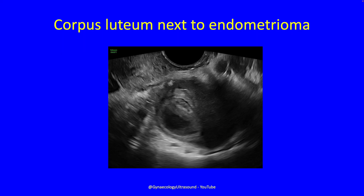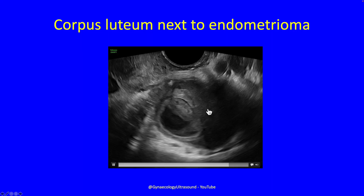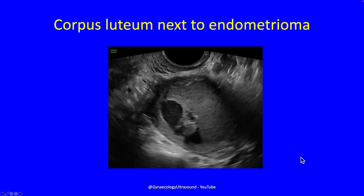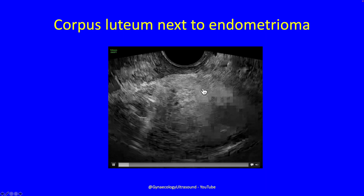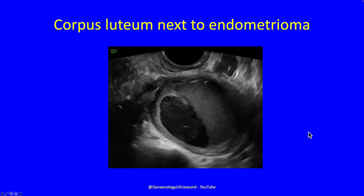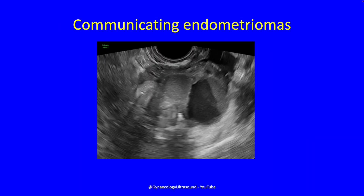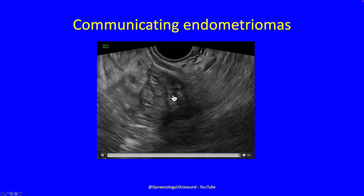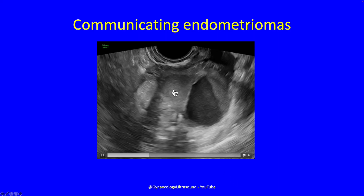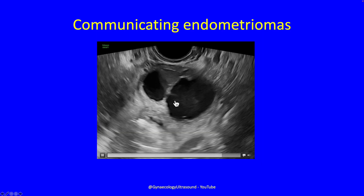Sometimes you see a corpus luteum right next to an endometrioma. This is the corpus luteum and this is the endometrioma. You can see it's slightly thick-walled and it would be vascular at the periphery with color Doppler, and there's some clot sediment in there, whereas this is the more typical ovarian endometrioma. Sometimes endometriomas communicate with each other — a fresher haemorrhagic cyst has ruptured into this more established endometrioma, as you can just see here.